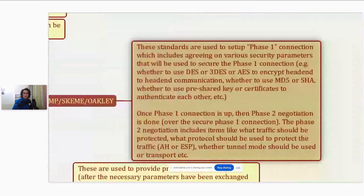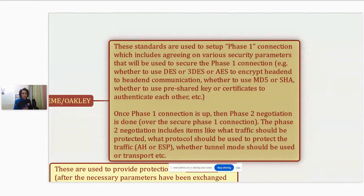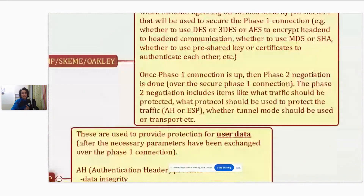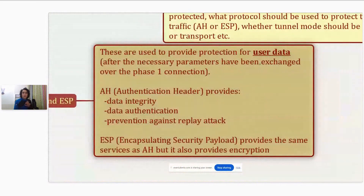These standards are used to set up the Phase One connection, which includes agreeing on various security parameters to secure that connection — for example, whether to use DES, 3DES, or AES; whether to use MD5 or SHA; whether to use pre-shared key or certificates. Once Phase One is up, Phase Two negotiation is done over the secure Phase One connection. The Phase Two negotiation includes items like what traffic should be protected, what protocol should be used to protect it, and whether tunnel mode or transport mode should be used.